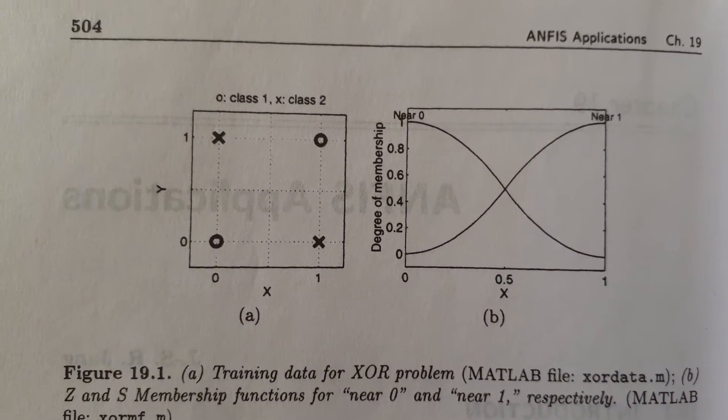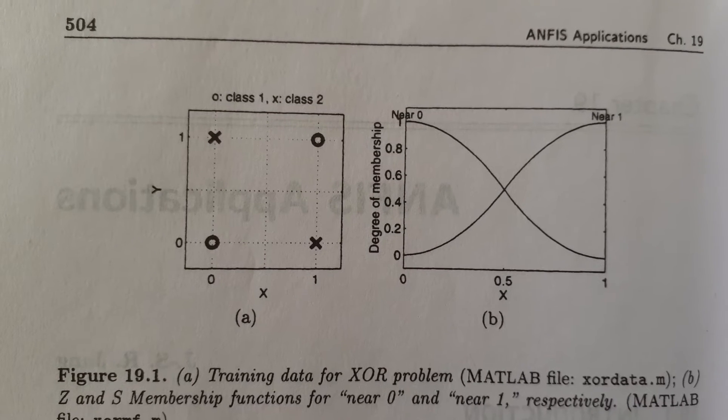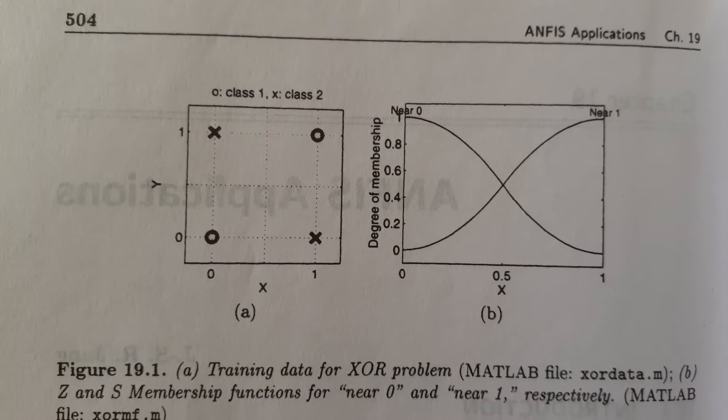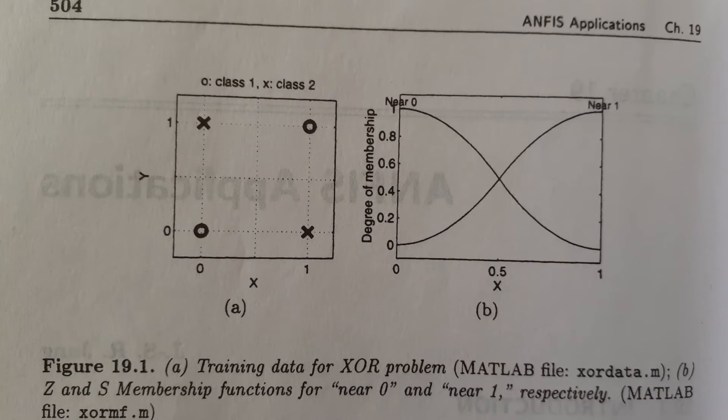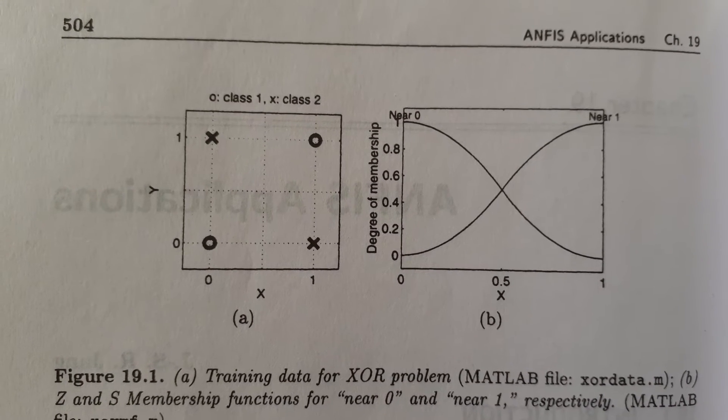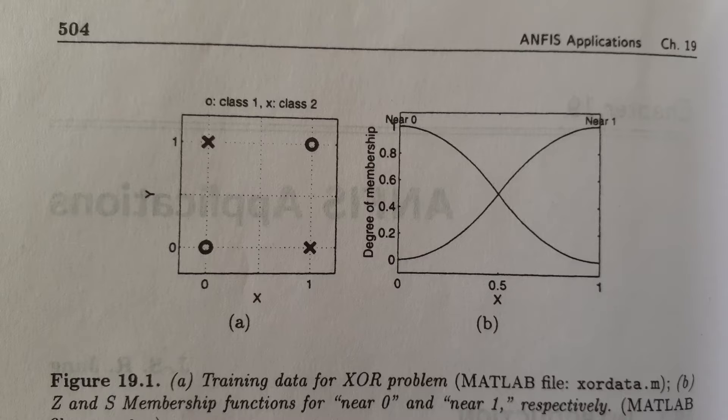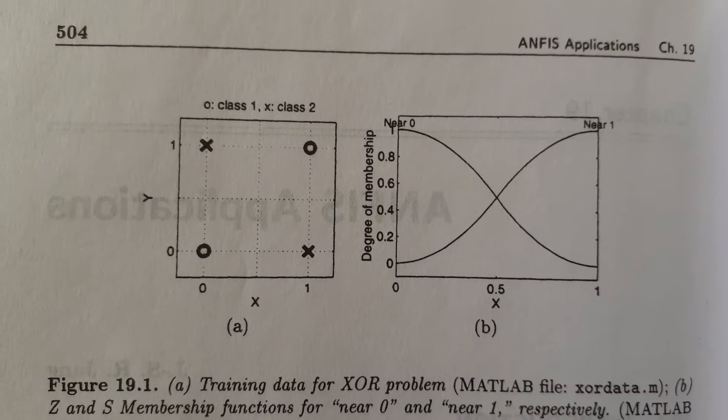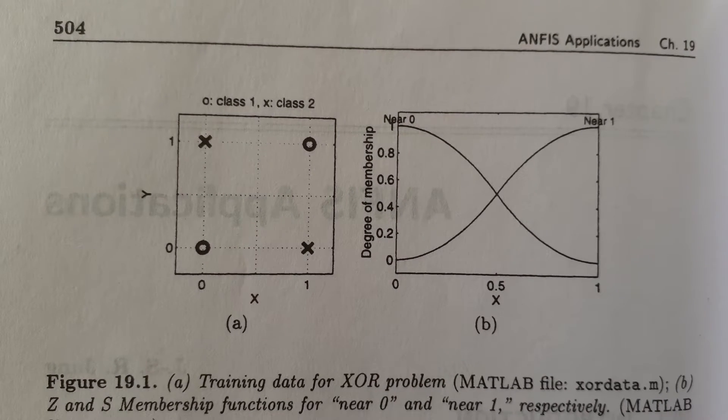For example, the meaning of near 0 and near 1. We still need to know the meaning of closeness between the input data x, y and one of the prototypes, say 0, 1.